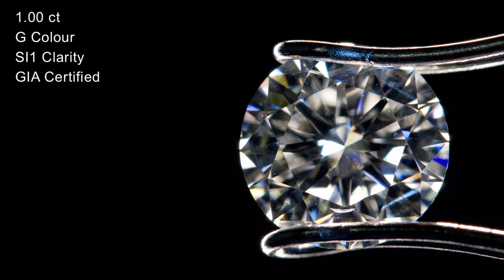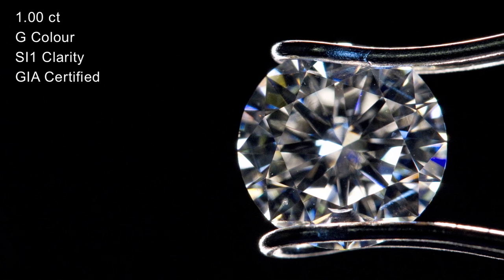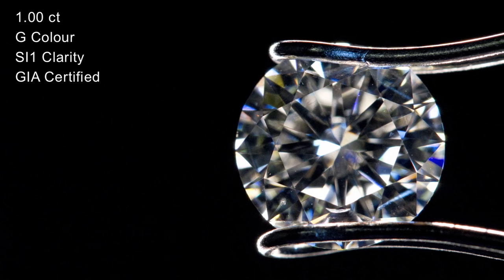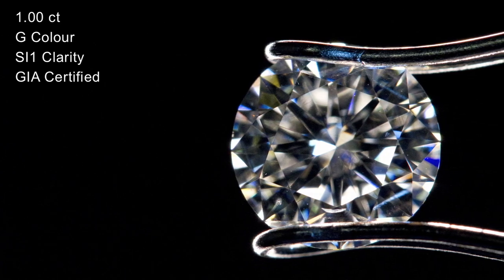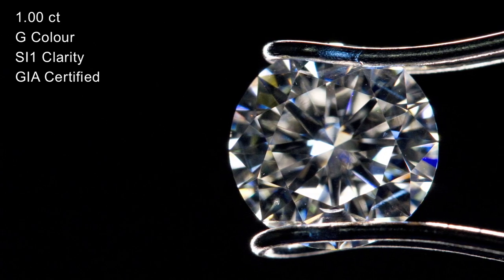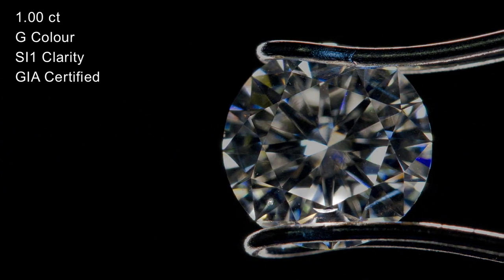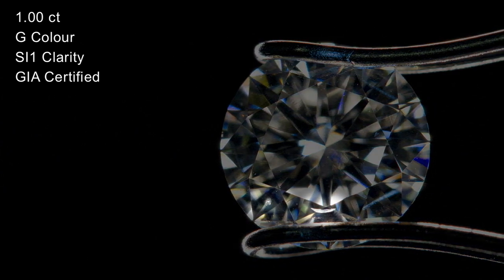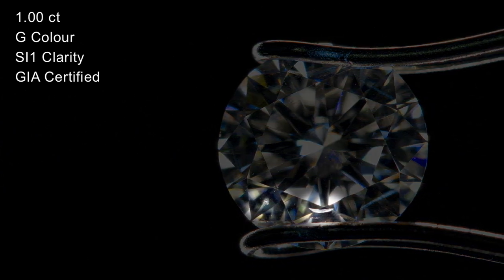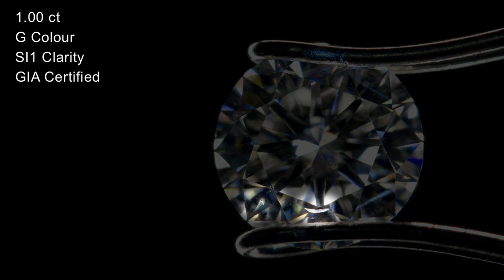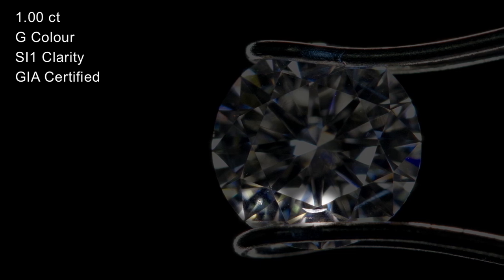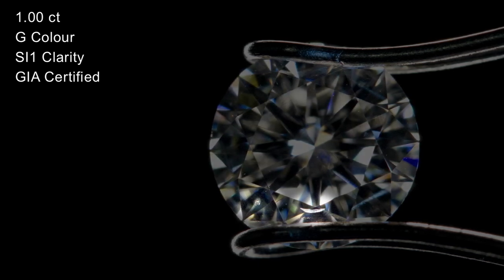This difference in appearance happens through all clarity grades. If we have a look here, you can see a diamond with SI1 clarity which again has been certified by GIA. This particular diamond has what is called a crystal and quite a thick feather just off the table. It also has some pinpoints dotted around the stone.